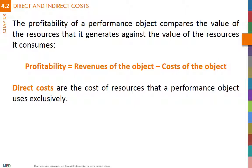Direct costs are the cost of resources that a performance object uses exclusively. These can be easily identified without ambiguity. For example, materials and certain labor — direct labor — are often direct costs to products.